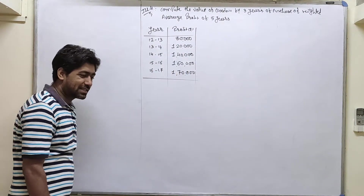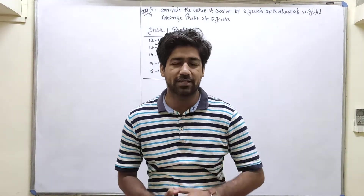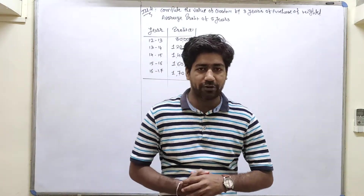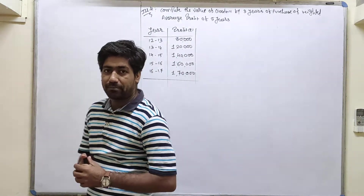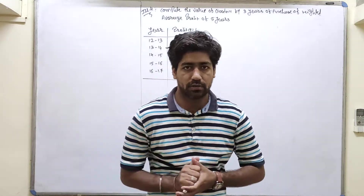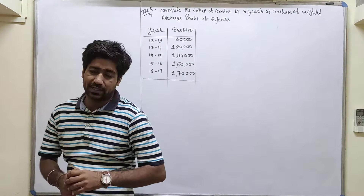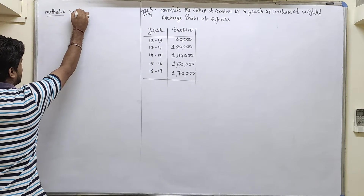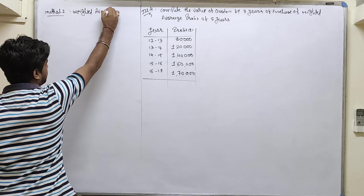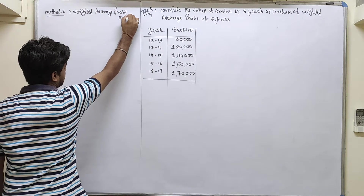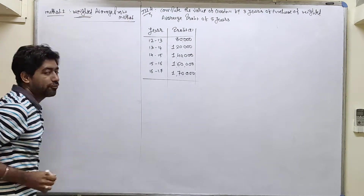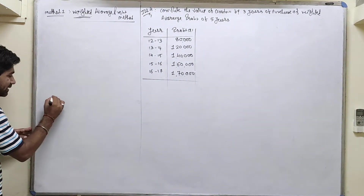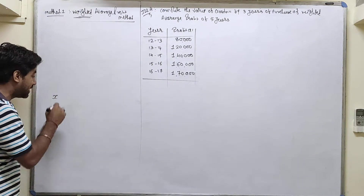In the last topic we discussed the first method for valuation of goodwill, that is the simple average profit method, also known as the average profit method. In that, we find out average profit by dividing total profit by number of years. Now we move on to method number two, that is the weighted average profit method. This word is not new — you already studied weighted average in your 11th commerce, also known as weighted mean.